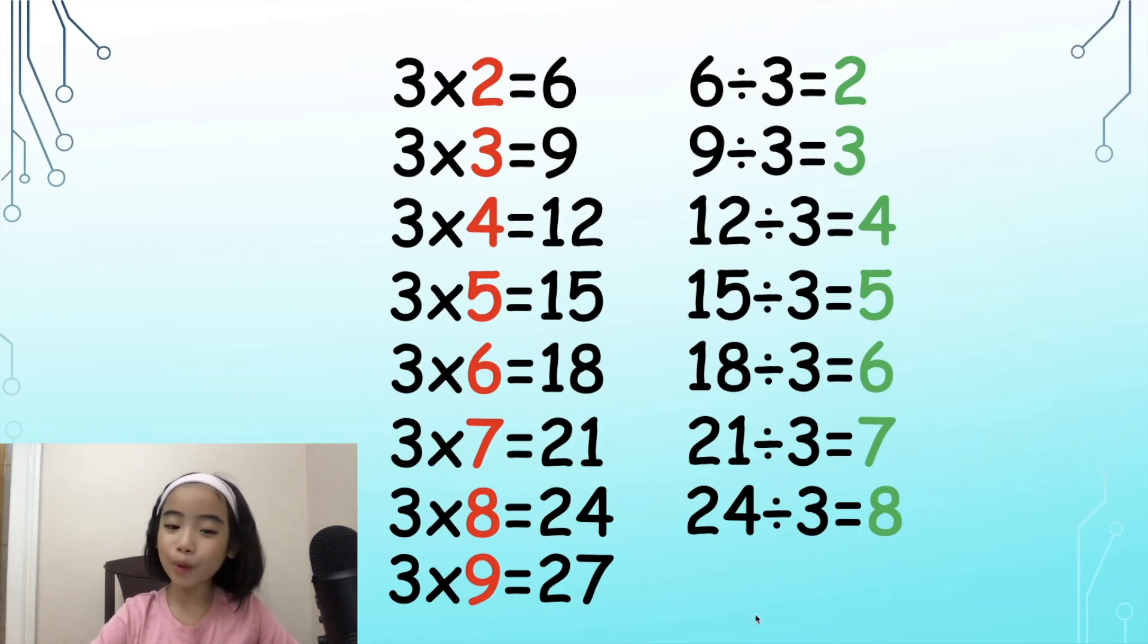And last of all, we have 27 divided by 3, let's say it all together, is 9.